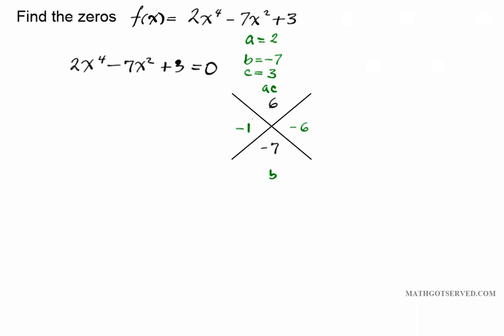Now any time you fill out your x-game you always want to do a real quick check just to verify that the numbers you came up with are in fact accurate. So when we add negative 1 and negative 6 we end up with negative 7 which is perfect.